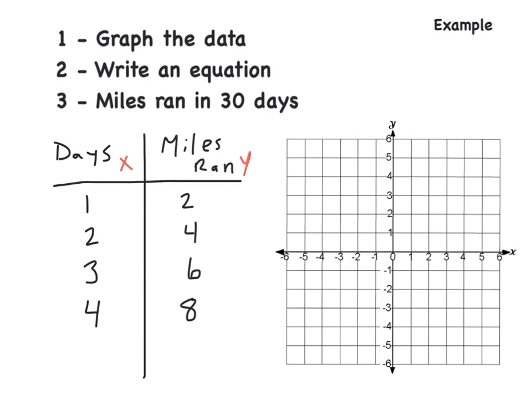So if we start graphing the points — 1, 2; 2, 4; 3, 6; and 4, 8 is going to be a little bit further off. If we graph this and draw our line, this is the graph that we're going to be working with.